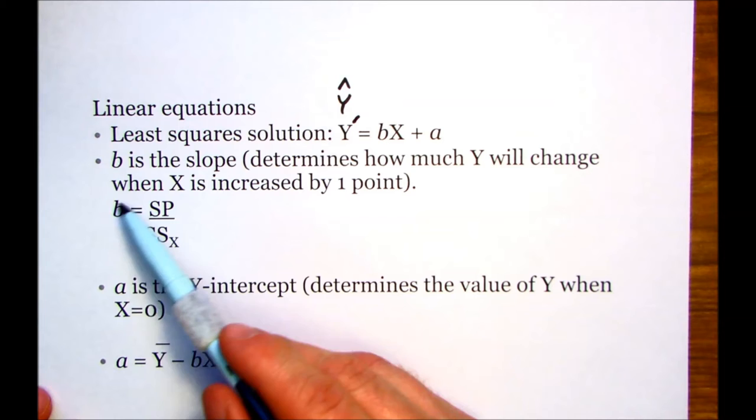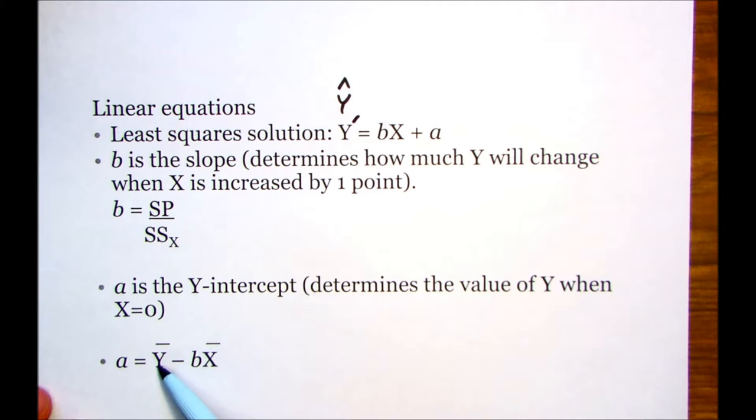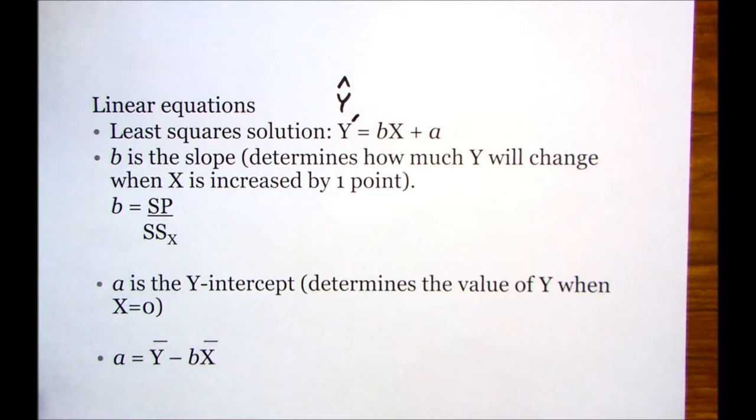Here's our formula, the sum of products. For the slope, sum of products divided by the sum of squares per x. And then here this y bar is just the mean for y. Here's our slope and here's the mean for x. So we're going to multiply the slope times the mean for x and subtract it from the mean for y.